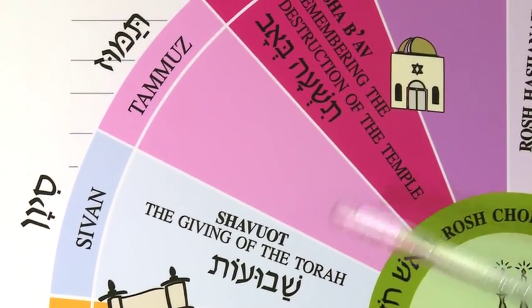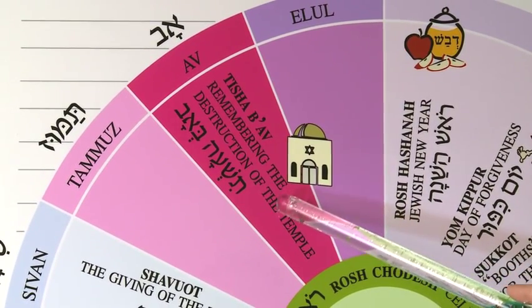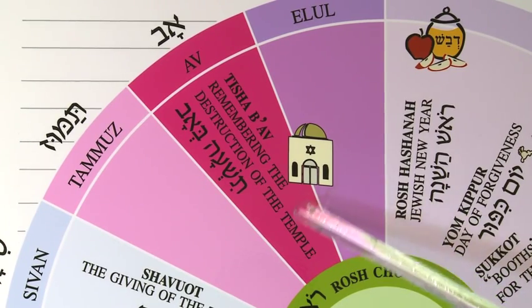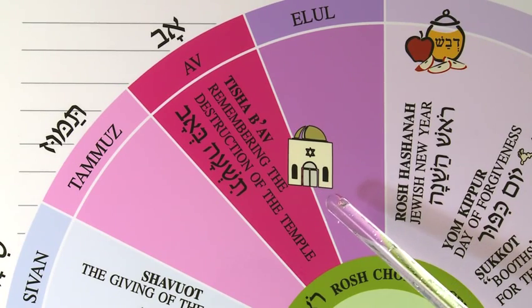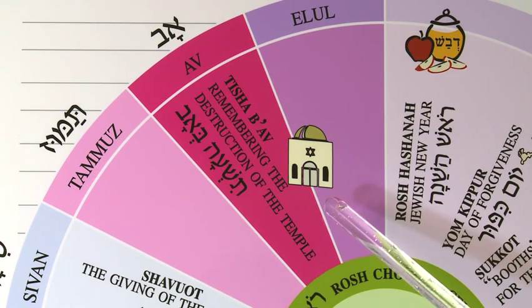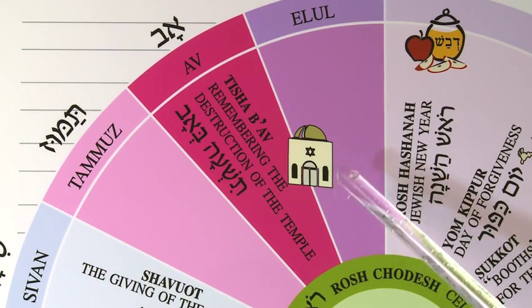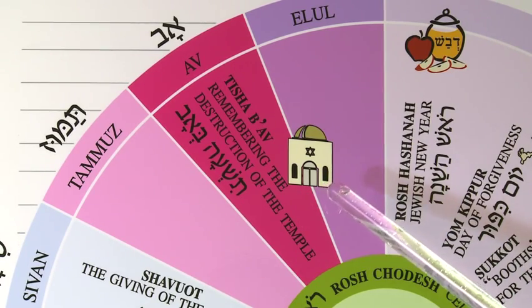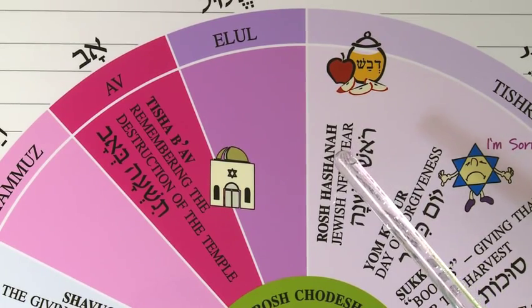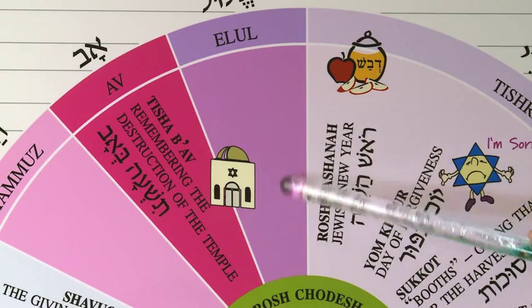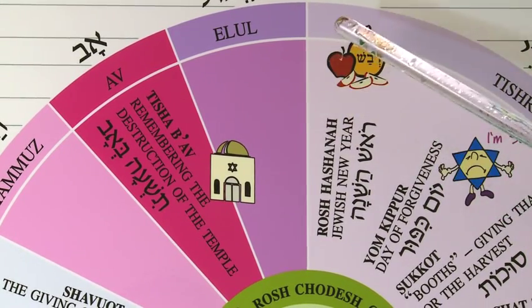Then we have the month of Tammuz — not a lot going on there. But then in the summer month of Av, we celebrate Tisha B'Av, and that is to remember the destruction of the Temple. We always want to remember: we had one temple that was destroyed, and then the second temple was destroyed. We remember those temples — that's the surrounding wall in Jerusalem, the Western Wall, as we pray to the Kotel and place notes in the crevices of the wall. Then we have the month of Elul, which is our last month. This is a month where Moses died — and it is said that Moses was born and died on the same exact day.